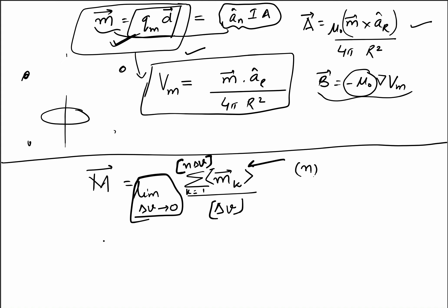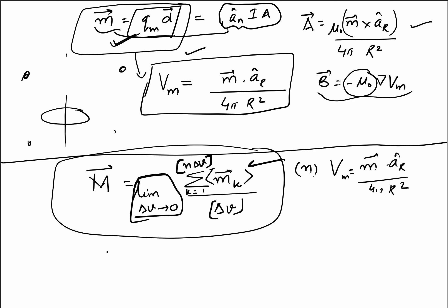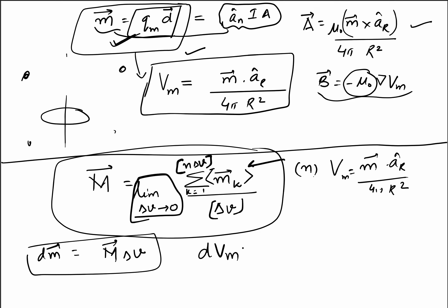Similar to the dielectric case, we want to find the potential due to this magnetization. The potential due to a magnetic dipole in a region with no current densities is written as m dot a_r over 4 pi r squared. Due to a small dipole moment in a small volume dv, the small magnetic scalar potential is dVm equals M dv dot a_r over 4 pi r squared. Please remember we are considering the case where there are no other current densities in the region.